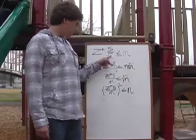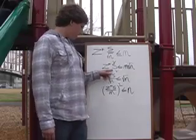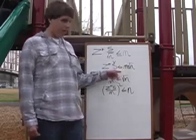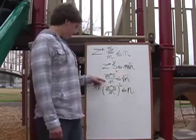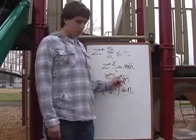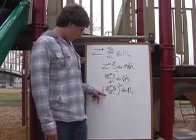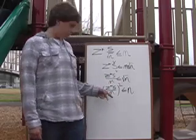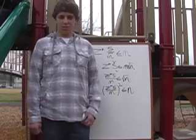We're going to solve for the sample size so we're going to put that on the right. So we do Z star times the standard deviation is less than or equal to m times the square root of n. And then we're going to move the m over and we get Z star times standard deviation over m is less than or equal to the square root of n. And finally we just put the square root on the other side and it's Z star times the standard deviation over the margin of error squared is less than or equal to n. And that's how you solve for the sample size.